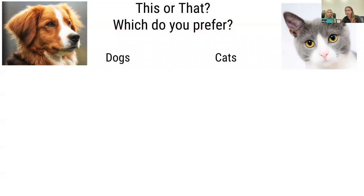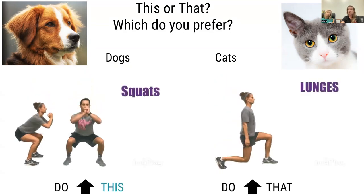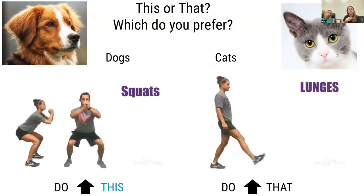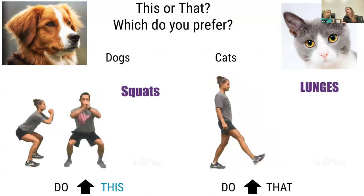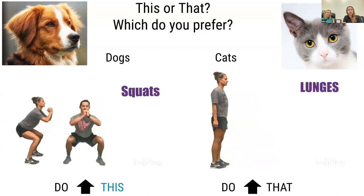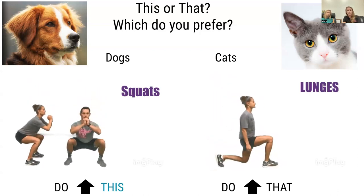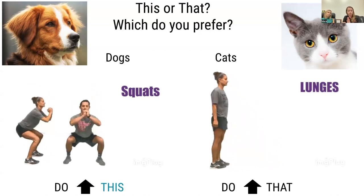Switching gears from BFF — I love using these This or That slides. This one can be a low-stakes brain break where students make a choice between two options. For example: do you prefer dogs or cats? Students make their choice and based on what they choose, they do a set of movements. If I choose dogs, I do squats; if Ashley chooses cats, she does lunges. You can use these for fun examples like would you rather go to the beach or play in the snow, have ice cream or tacos — building positive student-teacher relationships and getting students moving.